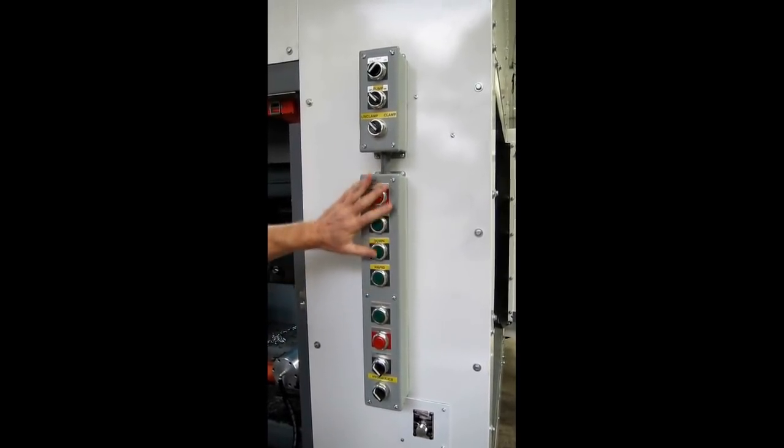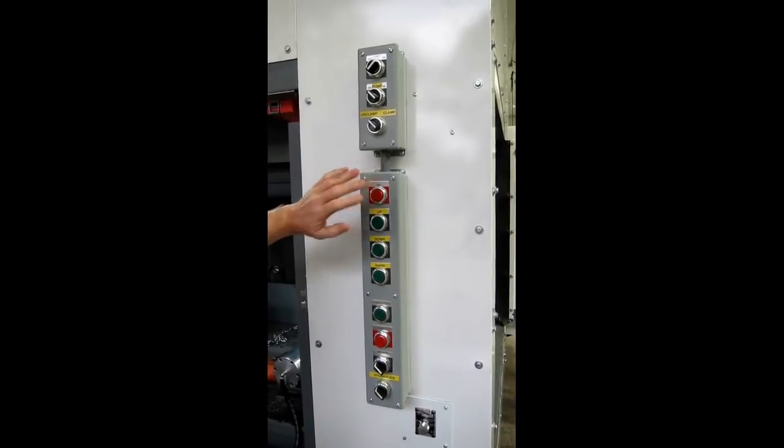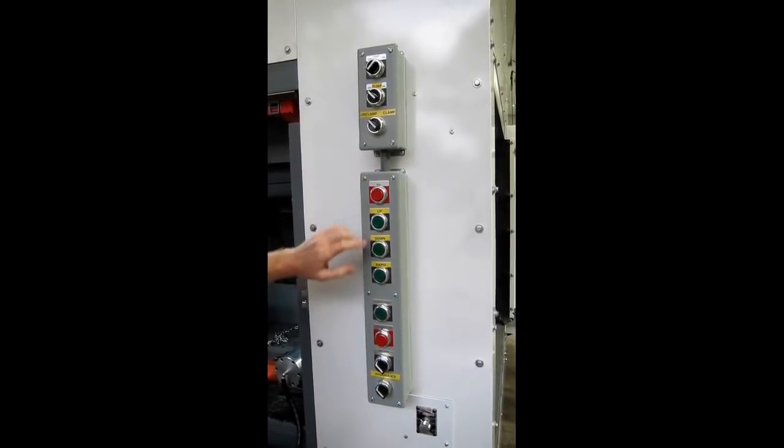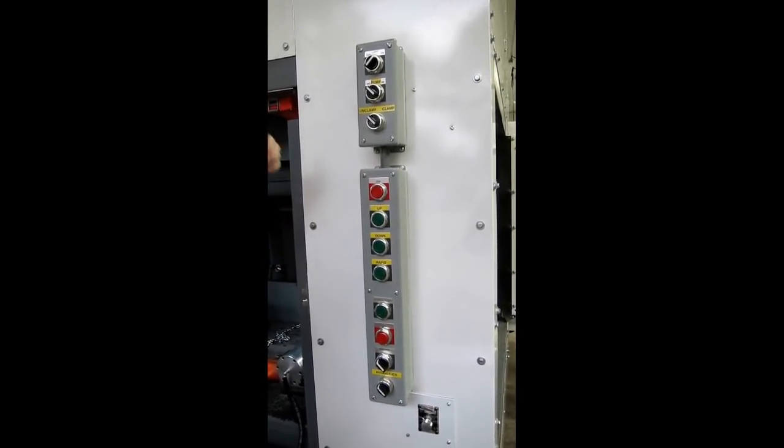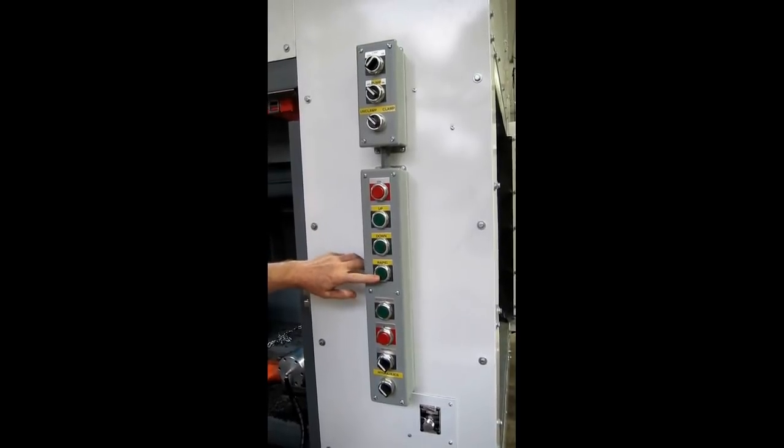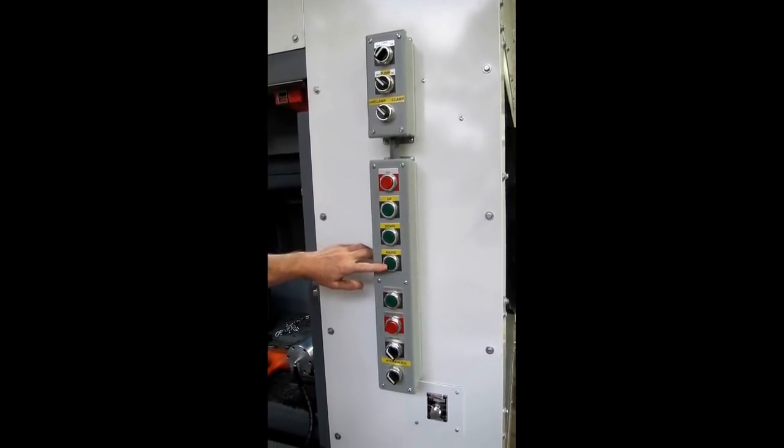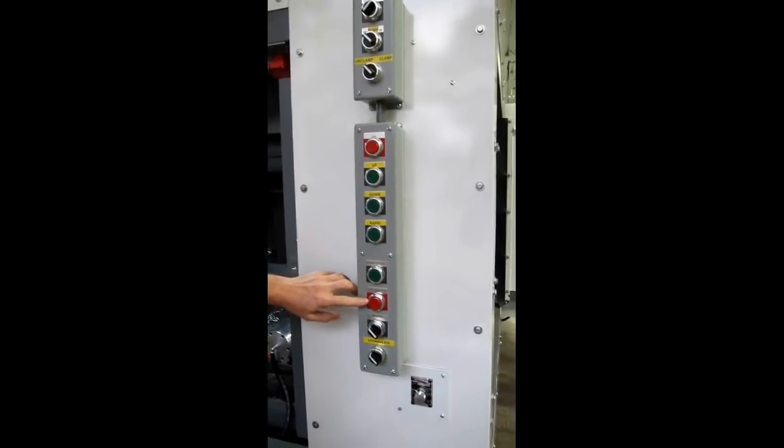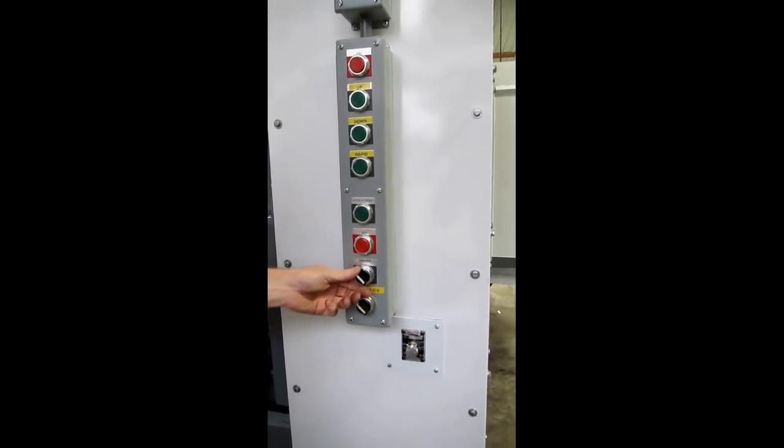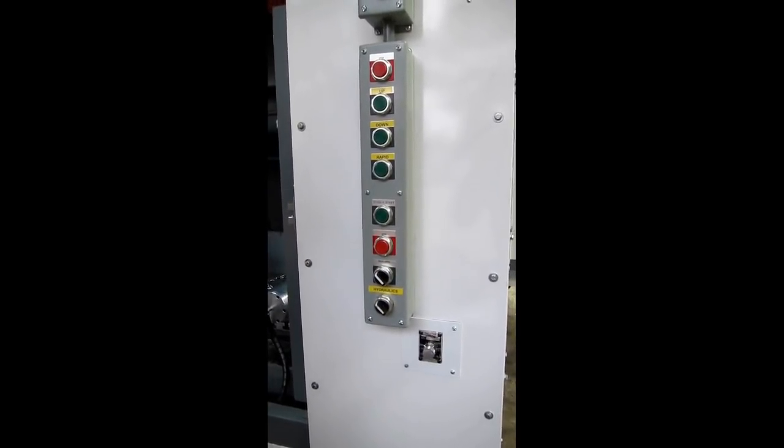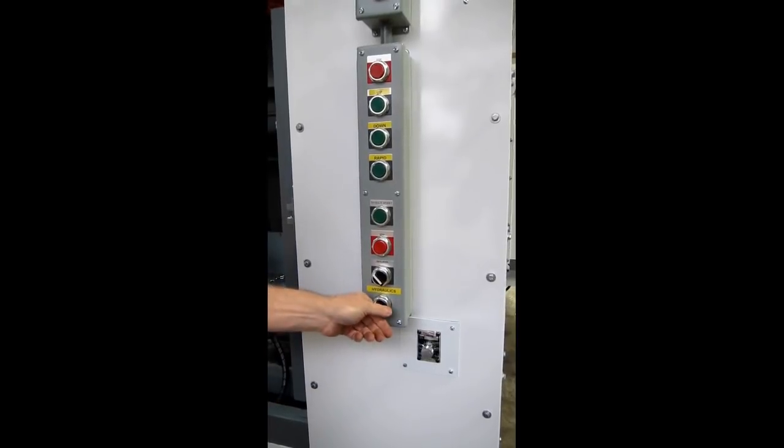This is your motion controls. Stop stops motion up or down. Up to return to the up position. Down for feed. Rapid for positioning. Spindle start and stop. Oscillation so the blade oscillates forward and back. And your hydraulics control.